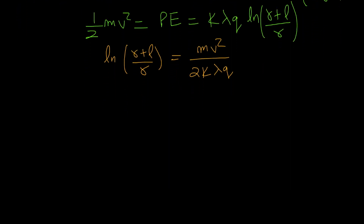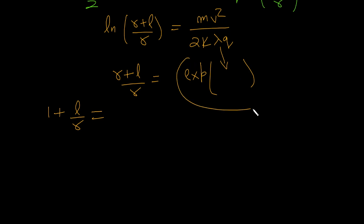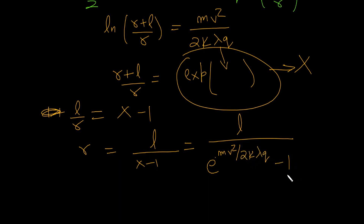Now we solve this for R. Taking the exponential of both sides: R plus L upon R equals e raised to the power (MV² / 2K lambda Q). This gives 1 plus L over R equals that exponential — let's call it X. Moving the 1 over: L over R equals X minus 1, so R equals L upon (X minus 1), which is L upon (e^(MV²/2K lambda Q) minus 1). This is your distance of closest approach.